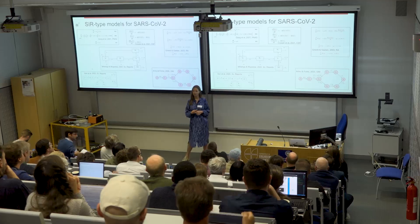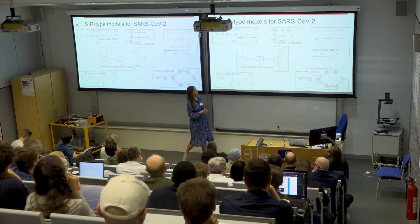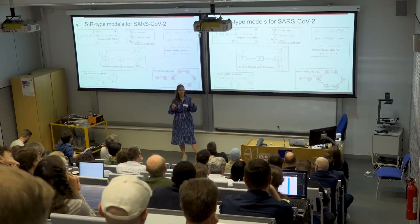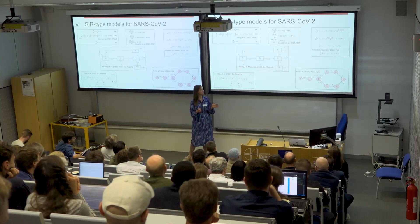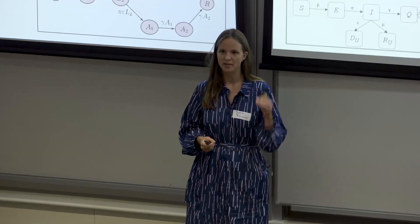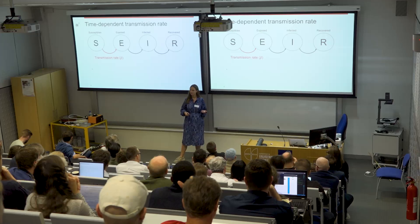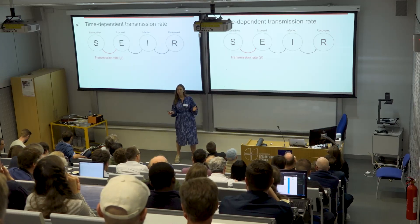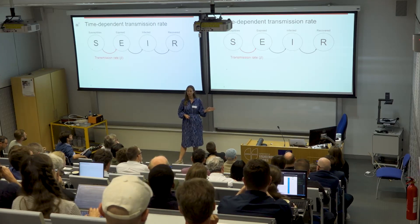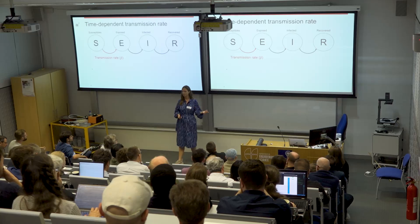For general background on compartmental models in infectious disease modeling — most of you have probably seen these SIR type models. The basic idea is that we distribute the population into compartments based on disease status of the individuals, then describe with a system of ordinary differential equations how individuals move between compartments. In our model we have susceptible individuals, an exposed compartment E, an infectious compartment I, and a recovered compartment where individuals are assumed to be immune for the duration of the model.